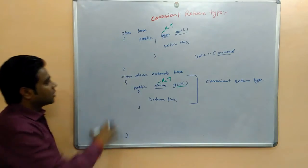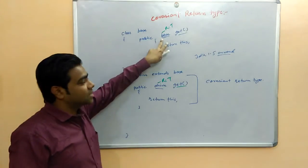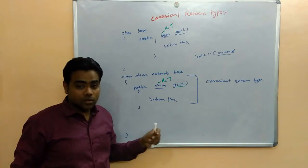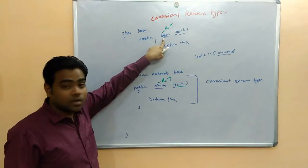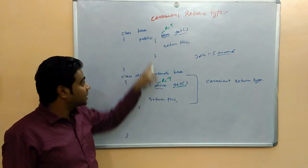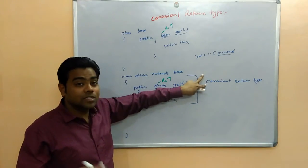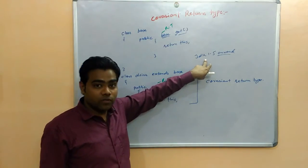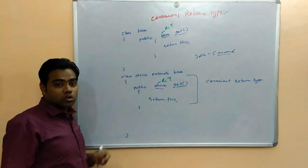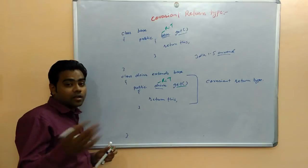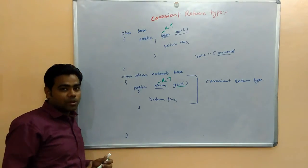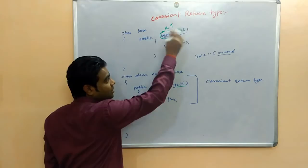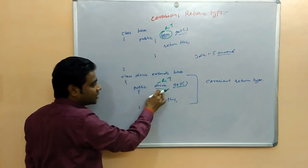This program is going to be compiled — you can see there was no error. This is the base class and the drive class. Since the concept of method signature was the same, but this return type is base type and this return type is drive — method signature is not exactly the same. It is an additional concept of method overriding in the case of co-variant return type. This is applicable to JDK 1.5 and is a very important concept from an interview perspective.